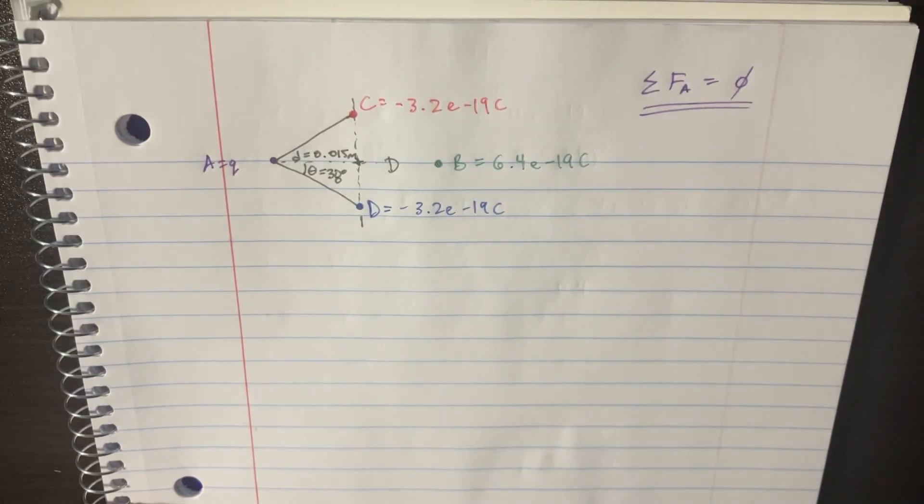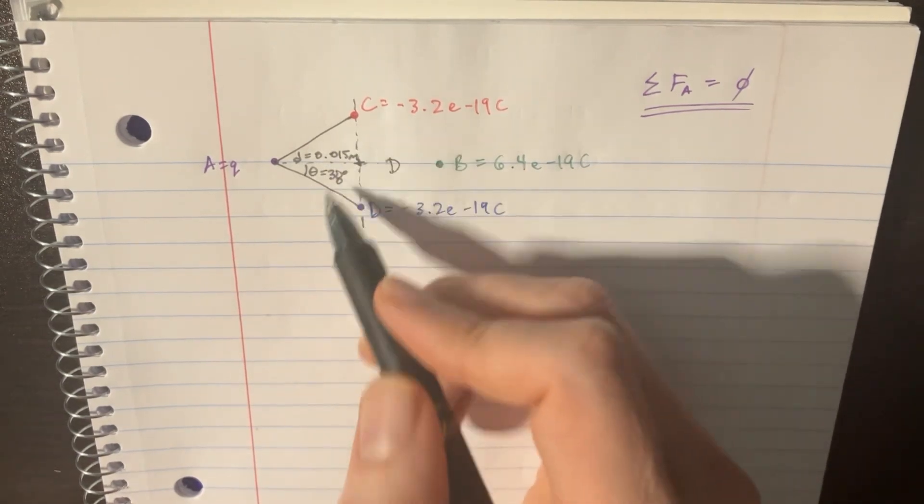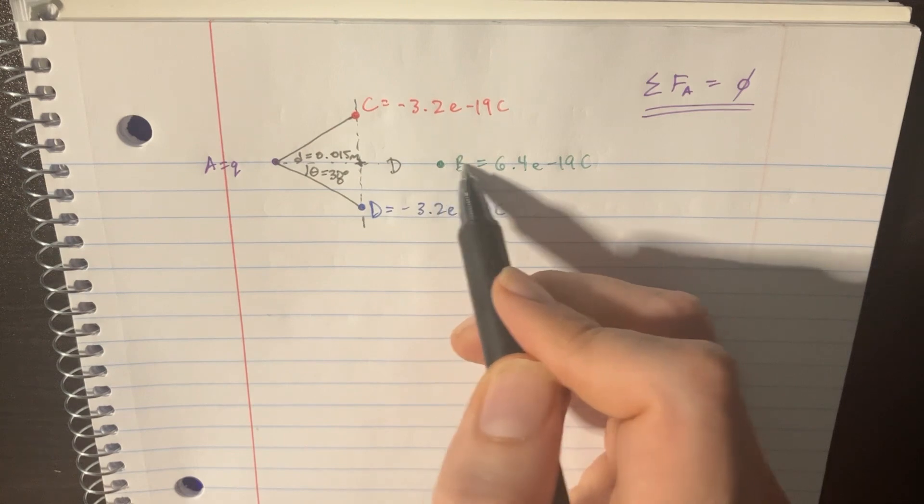Here's another quick net force problem. It's not too bad. We've basically just got a triangle of particles here, separated, and then we have this other particle.